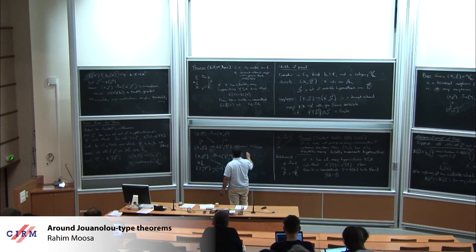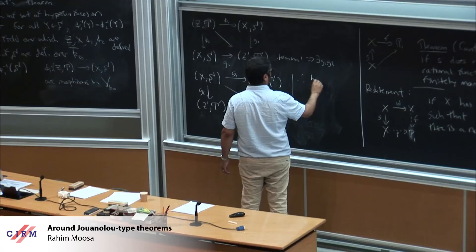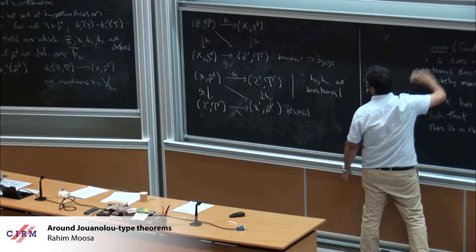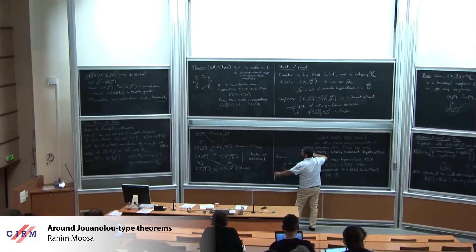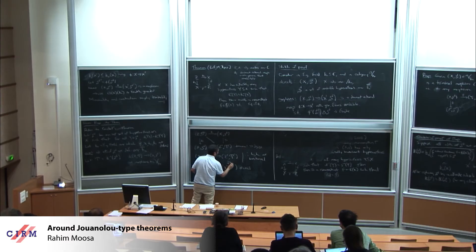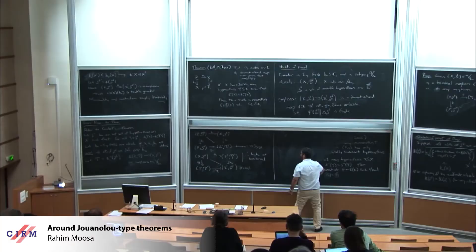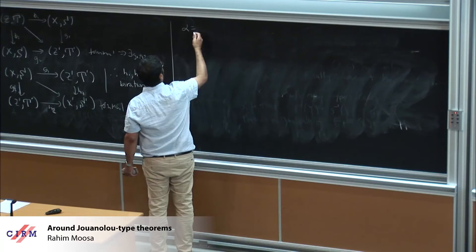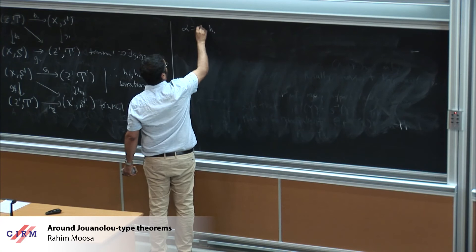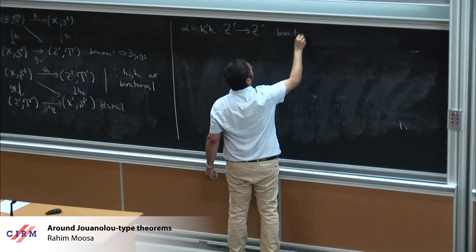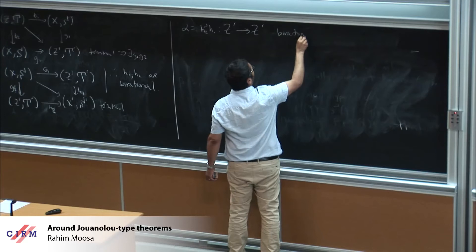Let α = H₁∘H₂⁻¹. This is a birational map from Z′ to itself — a dynamical system on Z′. Now for any Y in T′, chasing the diagram using the fact that φ₁⁻¹(Y) = φ₂⁻¹(Y) element-by-element shows that α⁻¹(Y) = Y. So we have a birational map α on Z′ with infinitely many totally invariant hypersurfaces T′. This satisfies the conditions of Kantat's theorem.